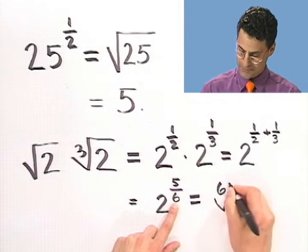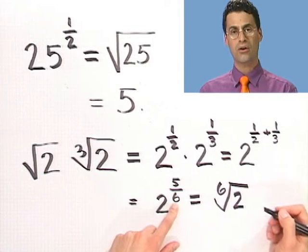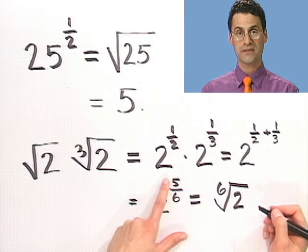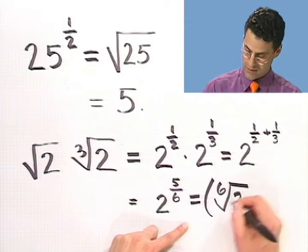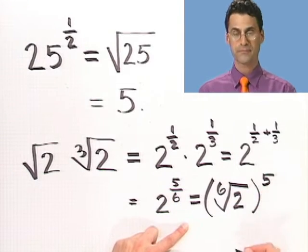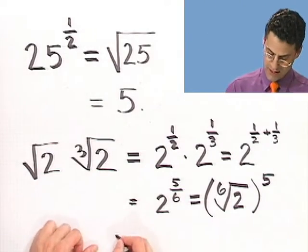Well, that 6 means, tells me what root I'm taking. So that would be the sixth root of 2. And then I raise the whole thing to the fifth power. That's the 5 on top. Now, there's another way of writing that, if you were so inclined. You could say, well, I'm going to take 2 and raise it to the fifth power.